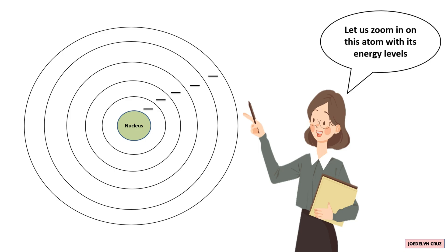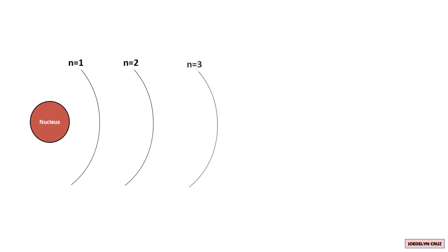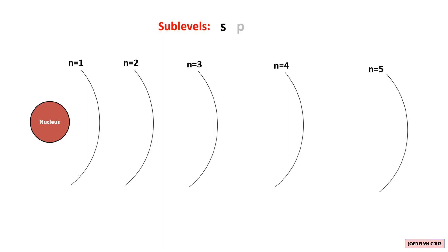To better understand the sublevels, let us zoom in on this atom with its energy levels. This is the nucleus, and the first, second, third, fourth, and fifth energy levels. As mentioned earlier, the sublevels are expressed as S, P, D, F, and G. In the first energy level, there is only one sublevel, which is S. The S sublevel is also present in the second, third, fourth, and fifth energy levels.